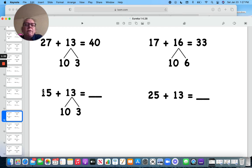Over here, 10 and 3. 15 and 10 is 25. 25, 26, 27, 28.